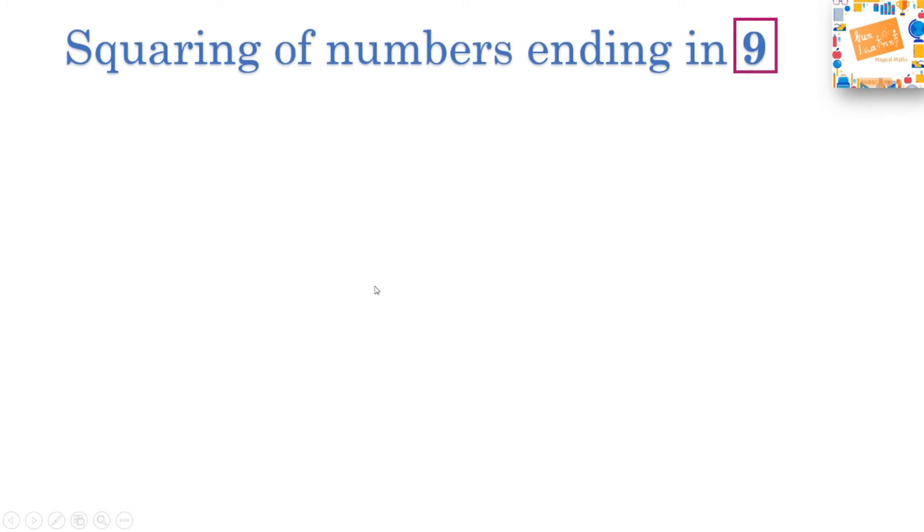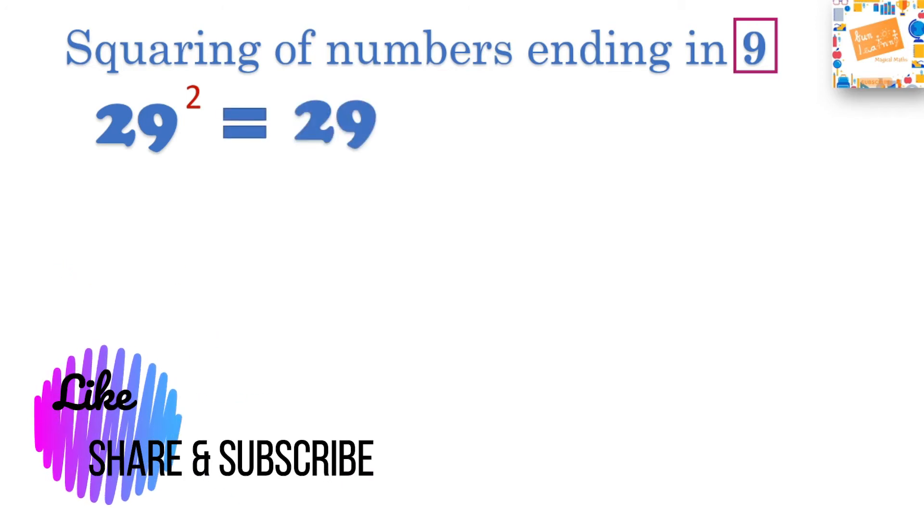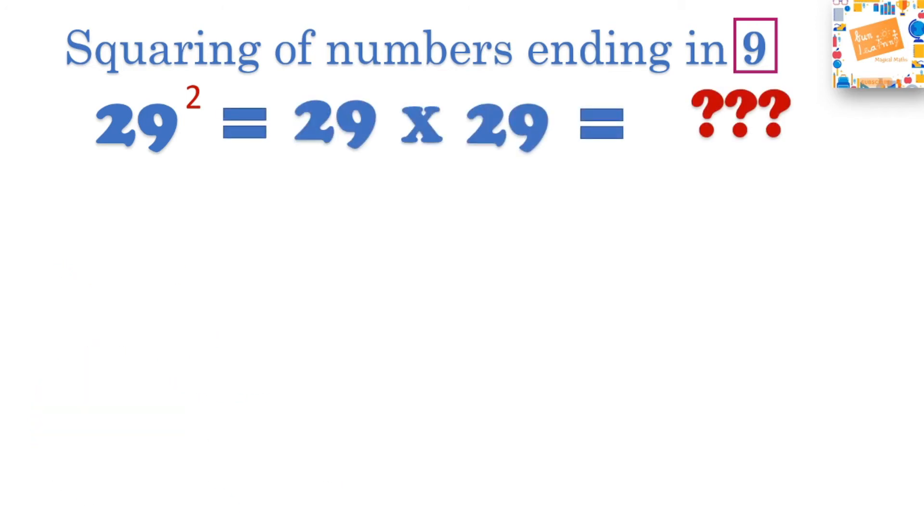Let's look at squaring of numbers ending in the number 9. Let's take 29 square which is equal to 29 times 29 and let's find out how much that is using our formula. For 29, let's take a note of what comes before and after that on the number line. We know that 30 is the nearest 10 to 29. Let's consider 29 as n because it will be easy for us to formulate. The objective here is to come to the nearest 10 and then do operations so that we can get the answer quickly.